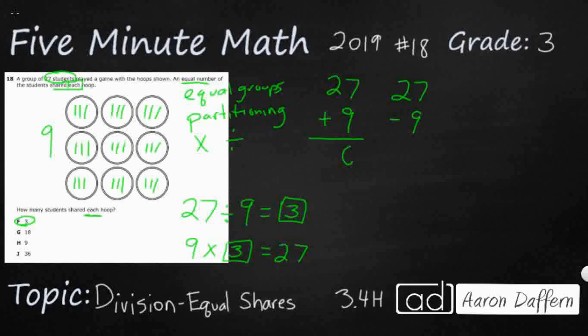So nine and seven is going to be sixteen. We're going to carry that, we're going to have thirty-six. So that's where this J comes in right here as we just decided to go ahead and add 27 and 9.